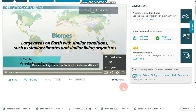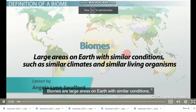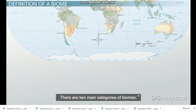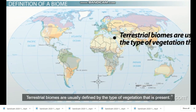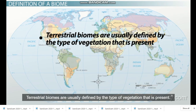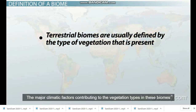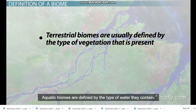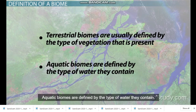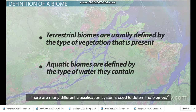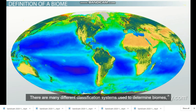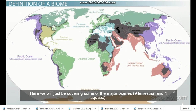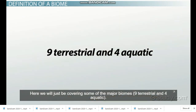Biomes are large areas on Earth with similar conditions such as similar climates and similar living organisms. There are two main categories of biomes. Terrestrial biomes are usually defined by the type of vegetation that is present. The major climatic factors contributing to the vegetation types in these biomes are temperature and precipitation. Aquatic biomes are defined by the type of water they contain. There are many different classification systems used to determine biomes, each resulting in different numbers of biomes. Here we will just be covering some of the major biomes: 9 terrestrial and 4 aquatic.